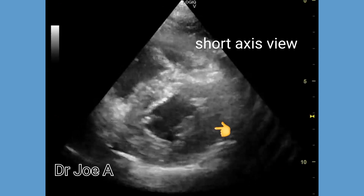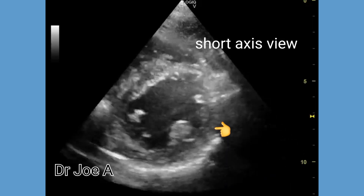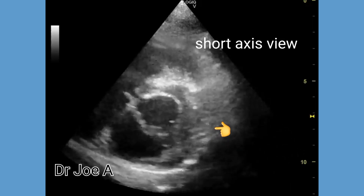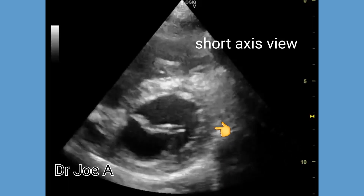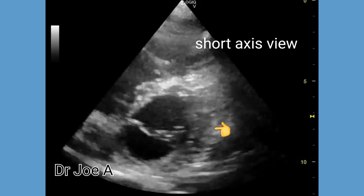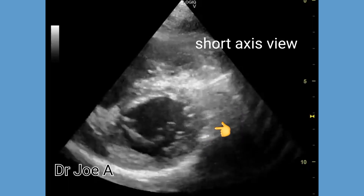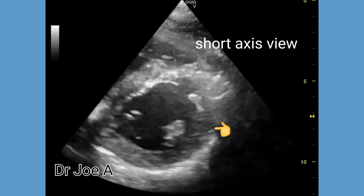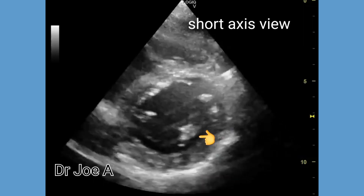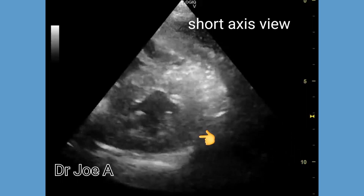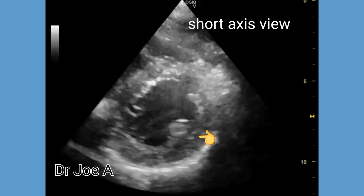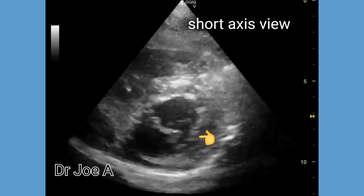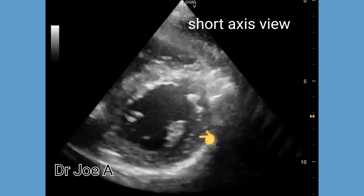In this short axis view, we see that only the papillary muscle is hypertrophied, but the left ventricular wall itself is spared. MRI imaging may be required to confirm the diagnosis. Studies suggest that papillary muscle hypertrophy may signify a partial failure of the valve mechanism.